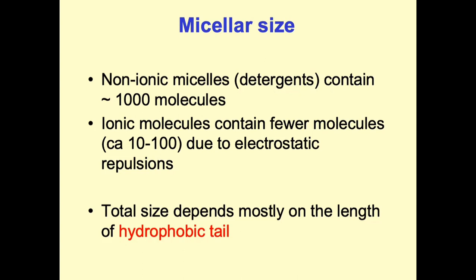For ionic surfactants, the charged head group leads to repulsion, meaning fewer molecules are present in the micellar structure — around 10 to 100. That is 10 to 100 times fewer molecules than in a non-ionic surfactant micelle, due to those electrostatic repulsions.